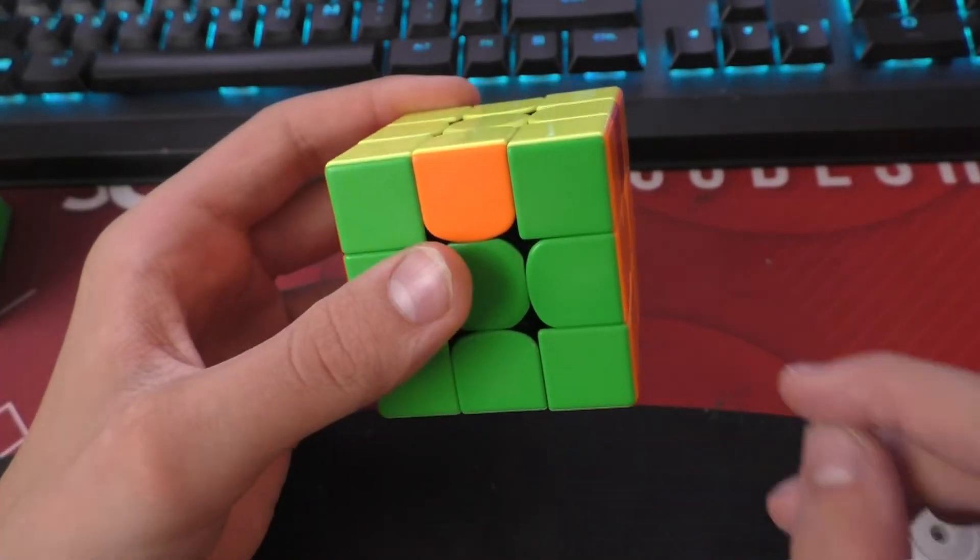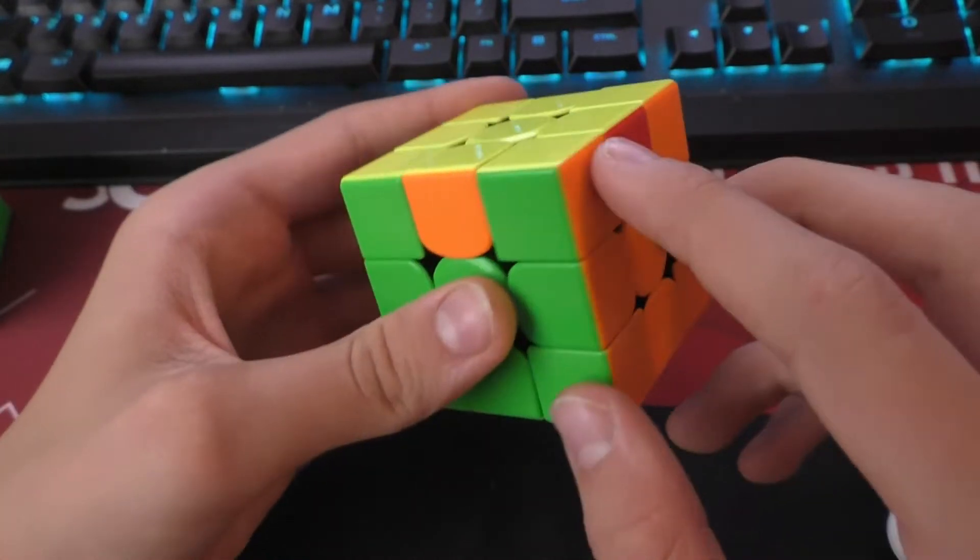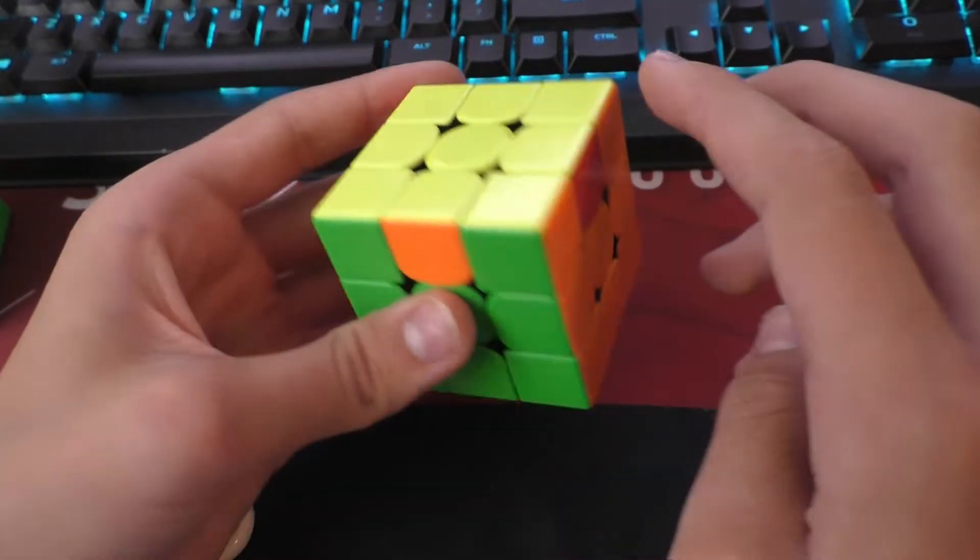A 3-cycle, on the other hand, is a possible PLL, as it is just the U-perm. Orange has moved to green, which has moved to red, which has moved back to orange.